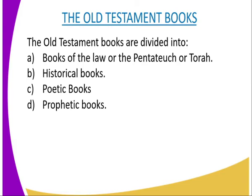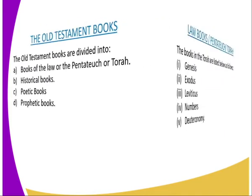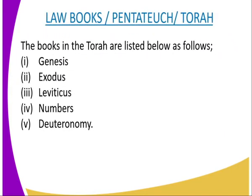Under the Old Testament, let's start with the Law books, also called the Pentateuch or the Book of the Torah. The books in the Torah are: Genesis, Exodus, Leviticus, Numbers, and Deuteronomy. Those are the Law books.